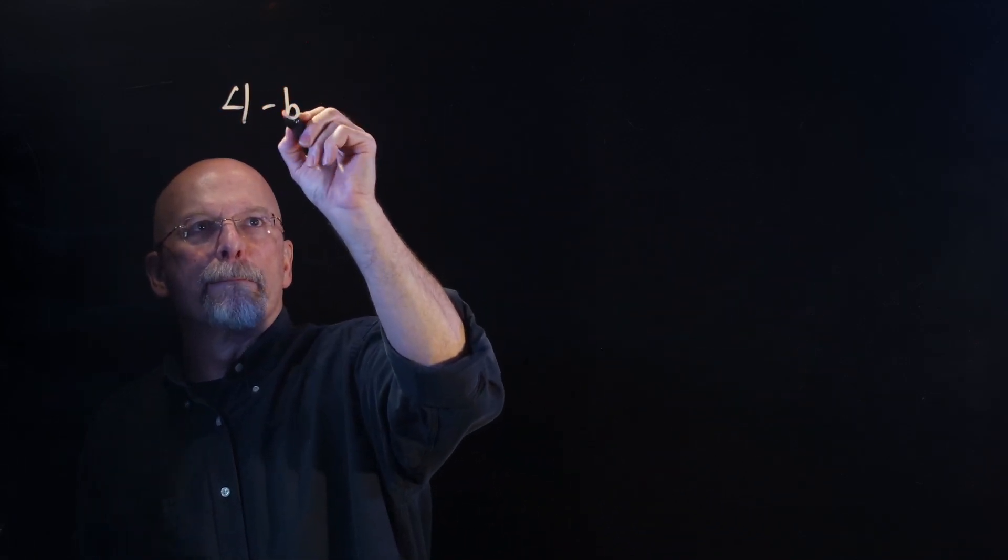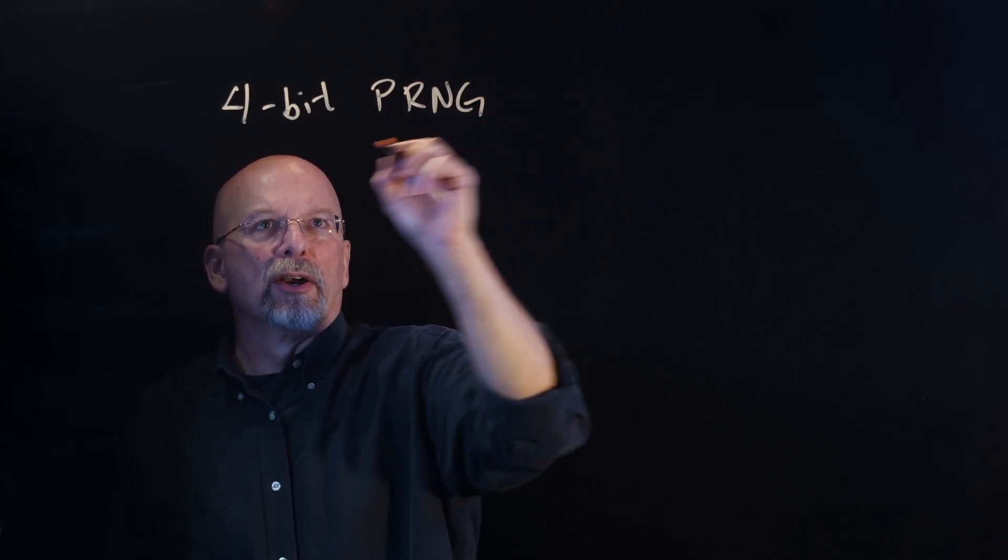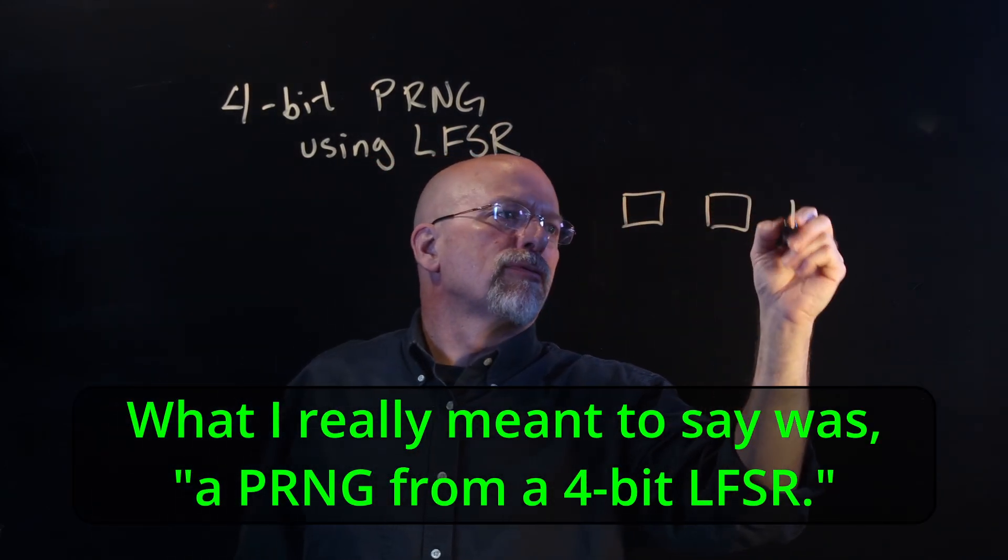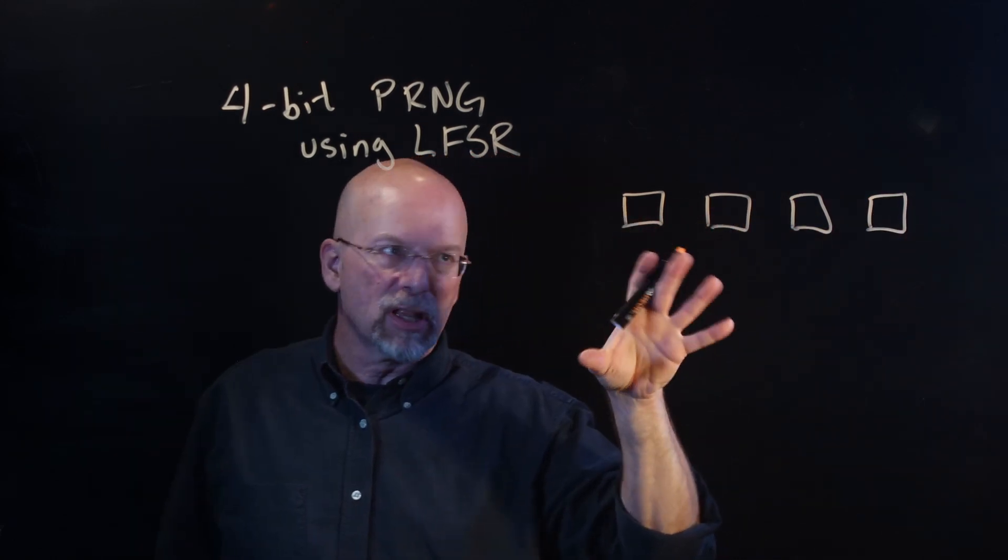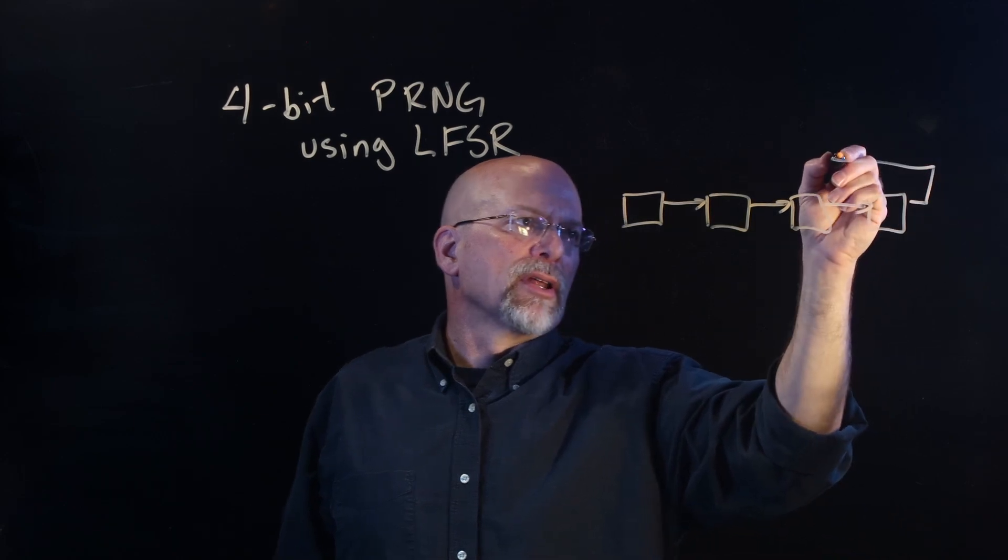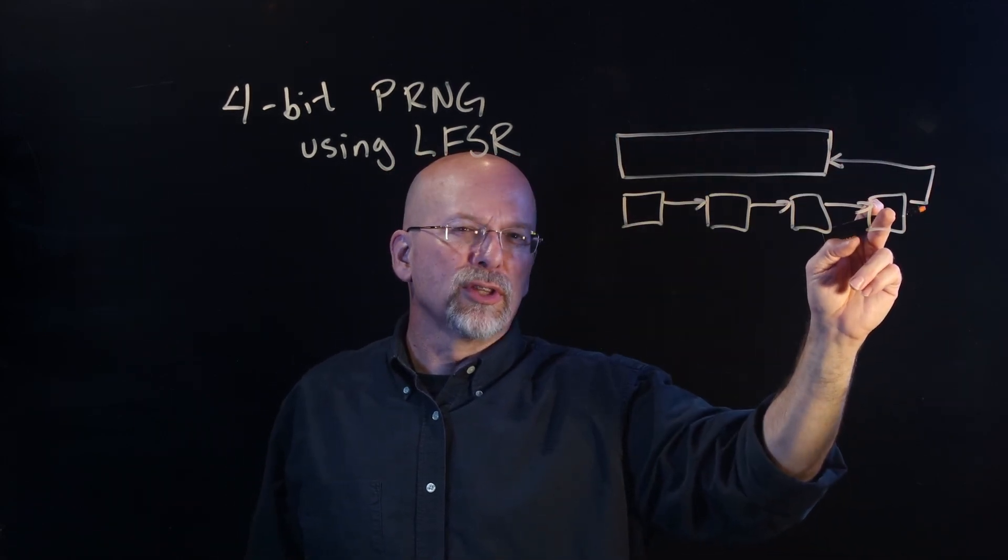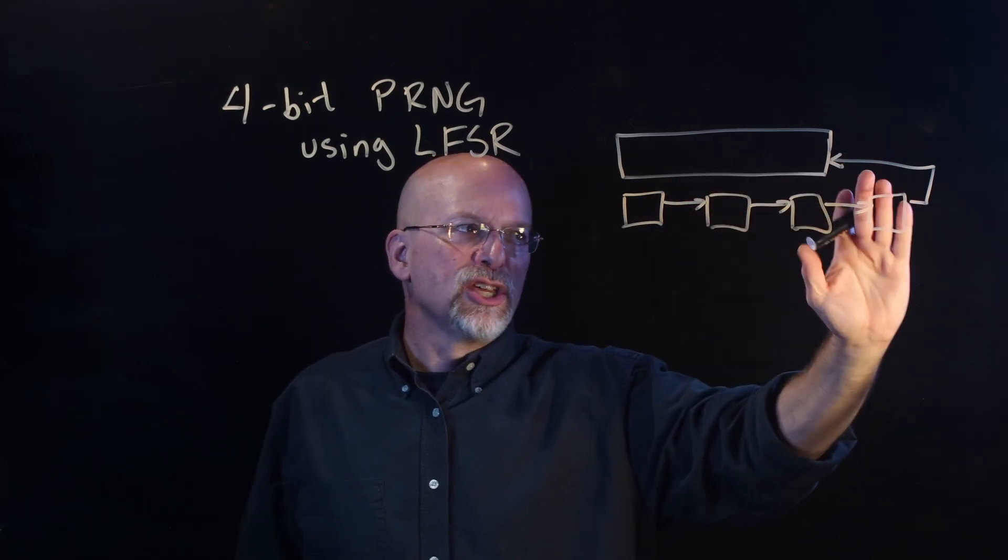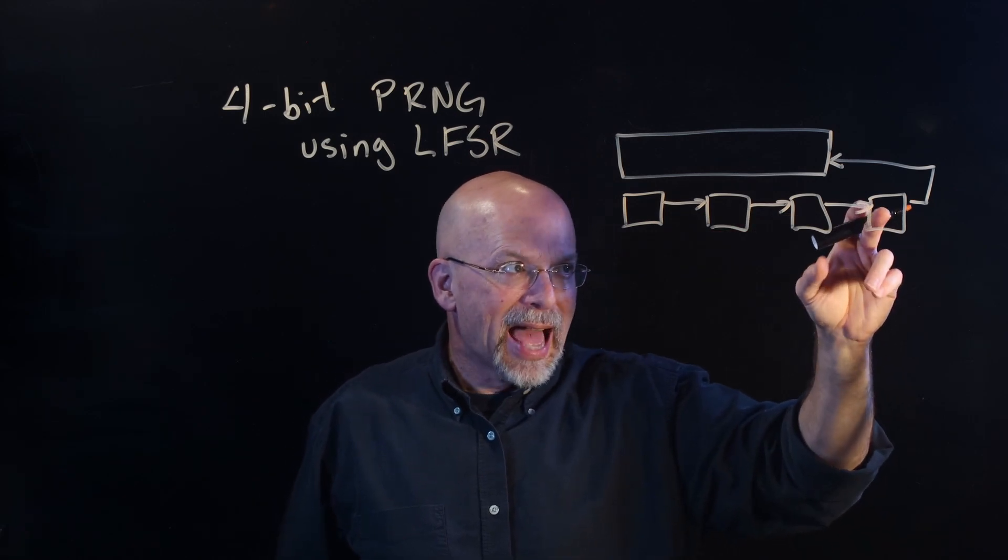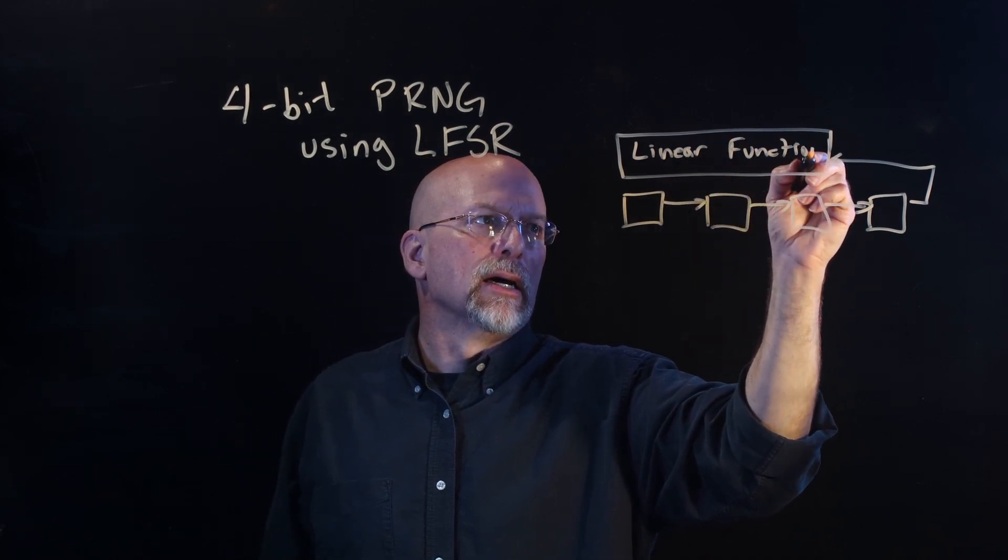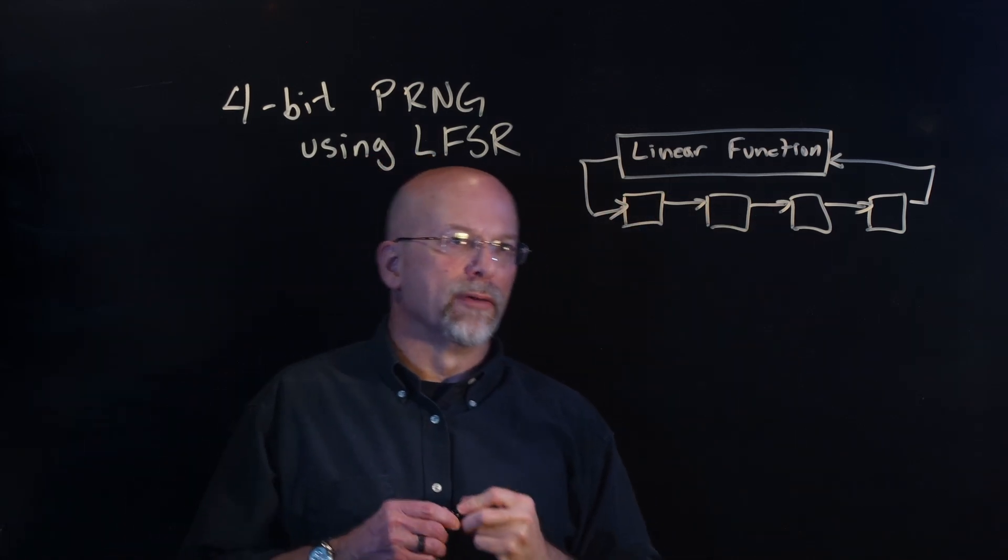Let's do a walkthrough of what this pseudo-random number generator might look like. Let's start out with a 4-bit PRNG using a linear feedback shift register. We've got our shift register made from 4 D flip-flops. They're all going to be driven off the same clock. The output of one goes into the input of the next one. The output of the last one is always included as part of our linear function here. If you don't have the least significant bit going into our linear function, you don't need that bit. That linear function is going to be made of exclusive OR operations to drive the input for our shift register.